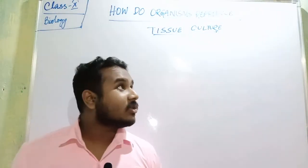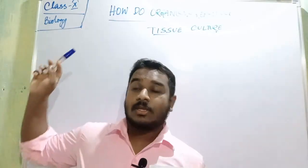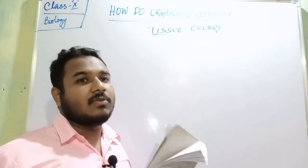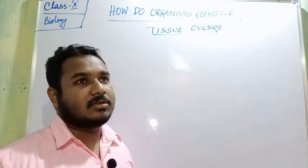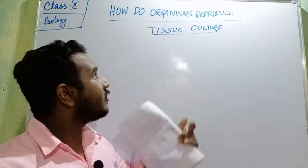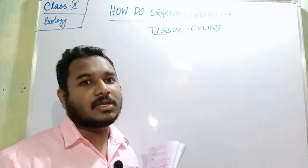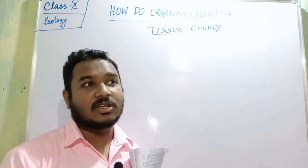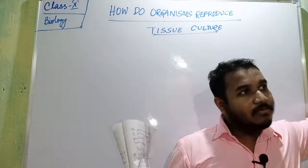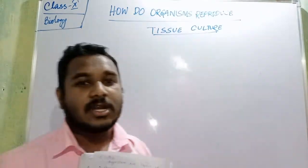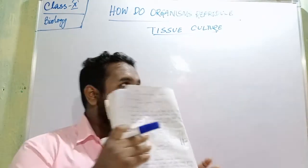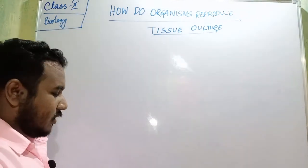Hello children, welcome to my channel. Today I am going to teach class 10th biology — how do organisms reproduce — specifically tissue culture. In my previous videos I covered asexual reproduction and its different types. Tissue culture is a special part because nowadays it is used in laboratories. Before starting the video, please ignore all kinds of background noises.